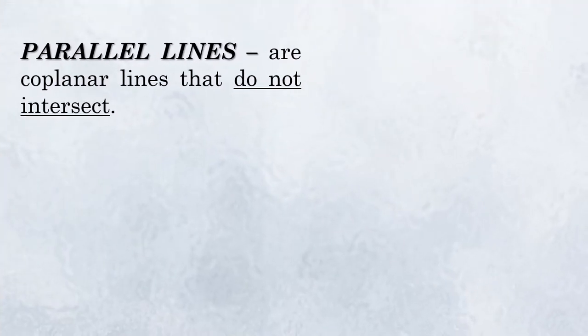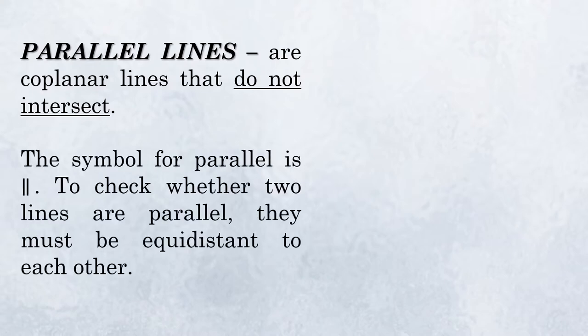Let's first discuss what parallel lines are. These are coplanar lines that do not intersect. The symbol for parallel is this one. To check whether two lines are parallel, they must be equidistant to each other.